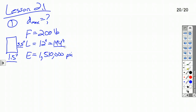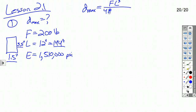So I want to find the beam deflection. That delta max, or d_max, is the force times the length cubed over 48EI. We have the modulus of elasticity, the force, and the length. The only thing we don't have is the moment of inertia, I — but we can calculate that.